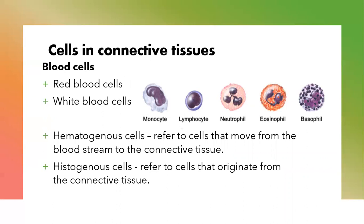Lastly, we have the blood cells also in the connective tissue. Some of the blood cells found in the connective tissue are the red blood cells, and the white blood cells, which consist of monocytes, lymphocytes, neutrophils, eosinophils, and basophils. The cells that originate from the blood and move into the connective tissue are referred to as hematogenous cells, and those that originate from the connective tissue are referred to as histogenous cells.